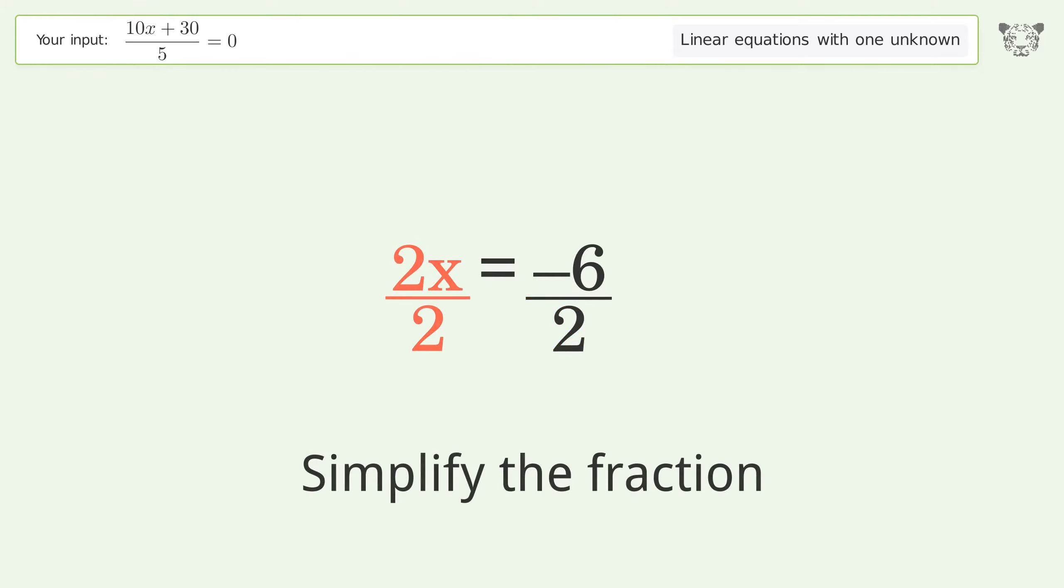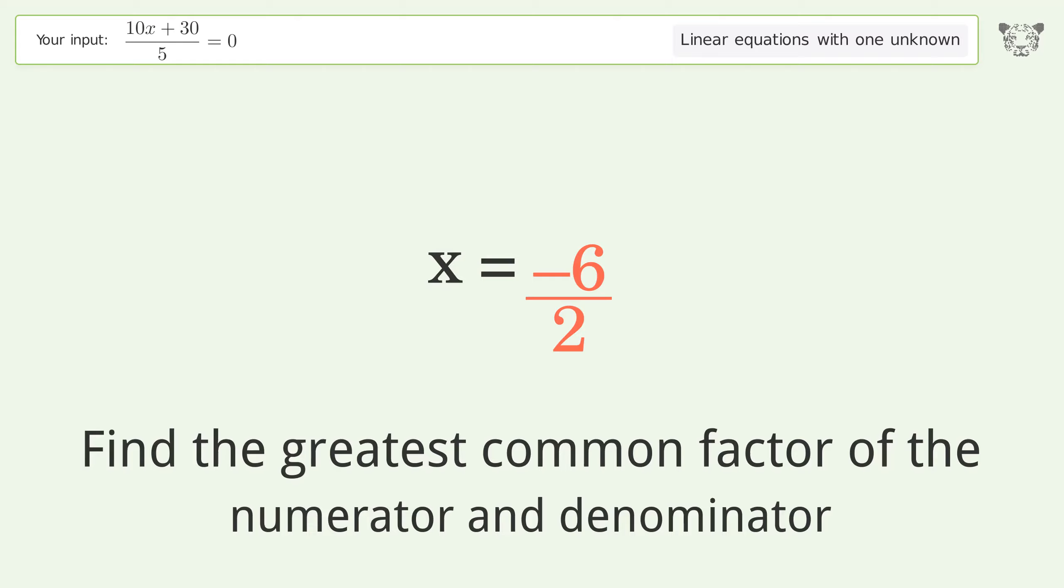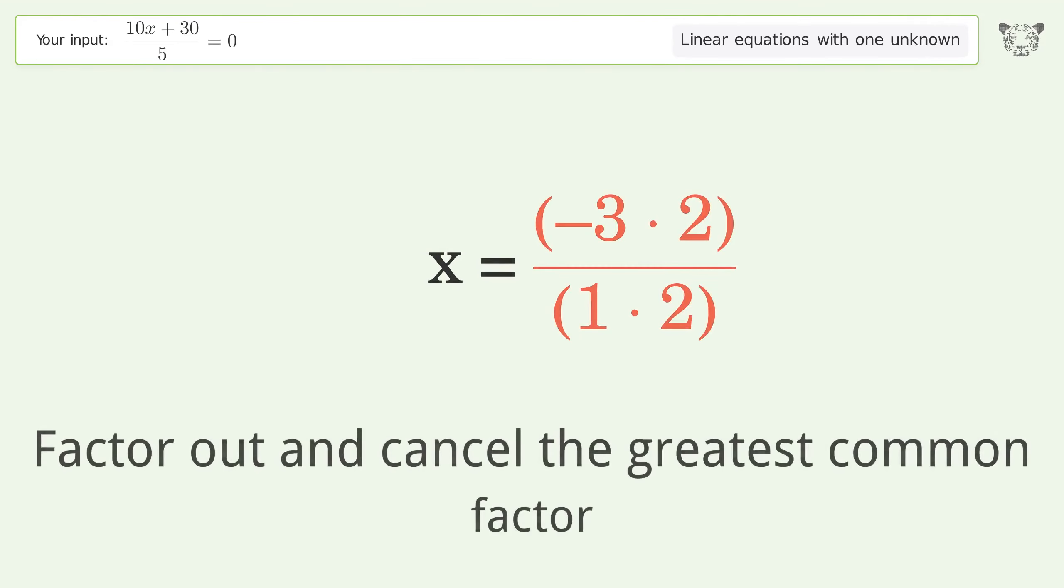Simplify the fraction. Find the greatest common factor of the numerator and denominator. Factor out and cancel the greatest common factor.